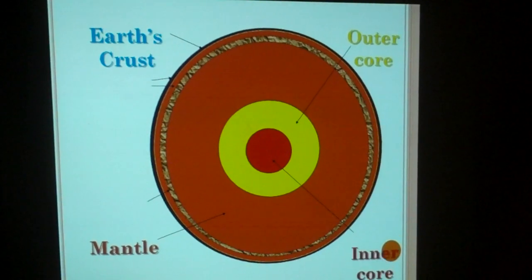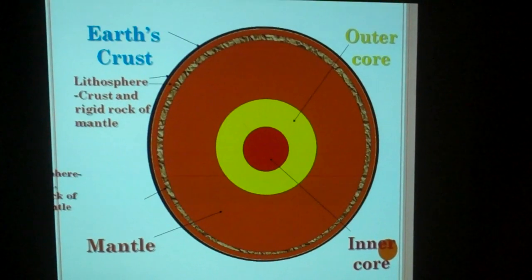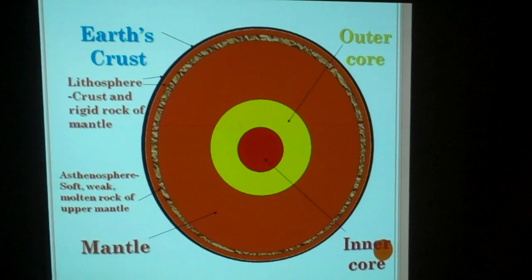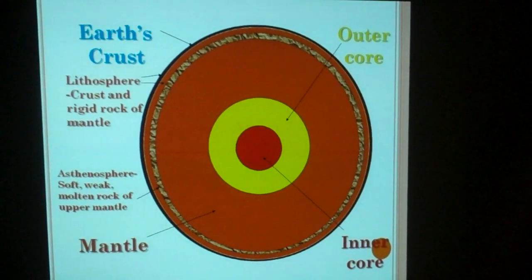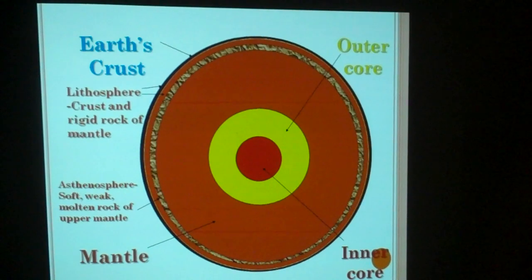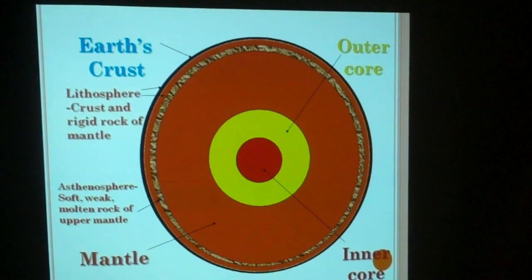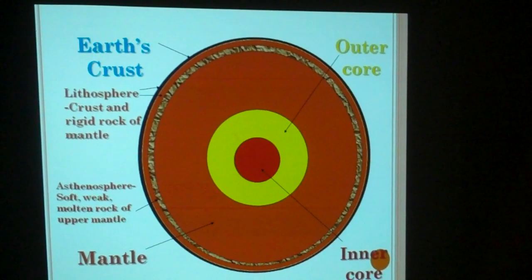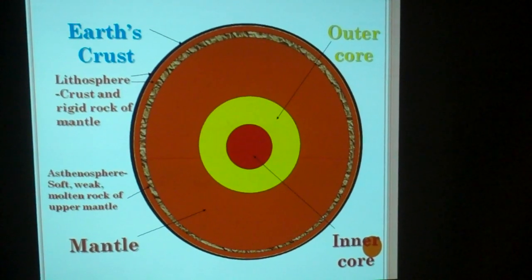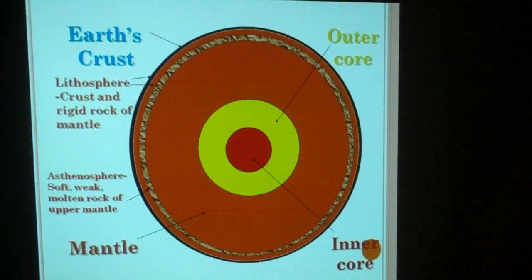Here is a flattened view rather than a cross-section of all the layers of the Earth. The outer layer is the Earth's crust. The next layer in is the mantle — it is the thickest layer. And then you have the two parts of the core: the outer part of the core is liquid, and the inner part of the core is solid metal.